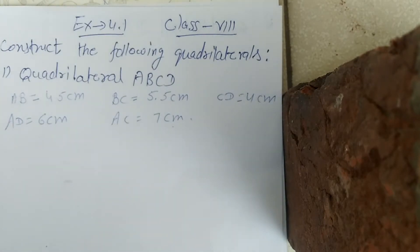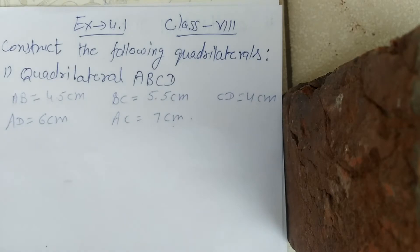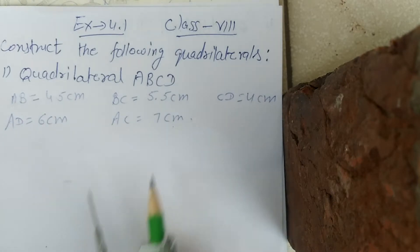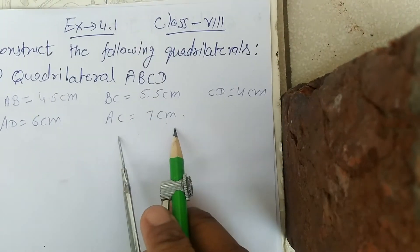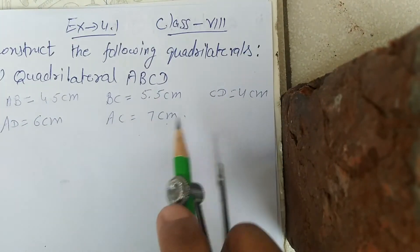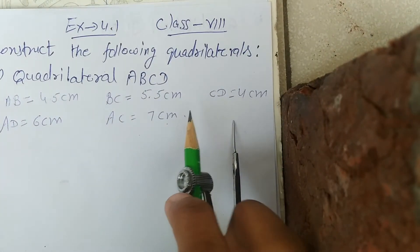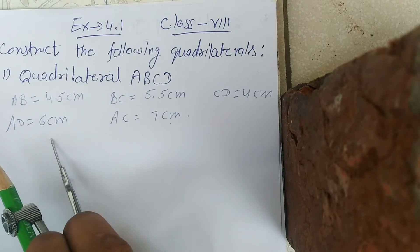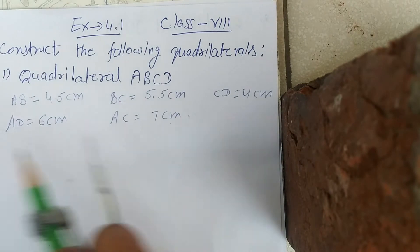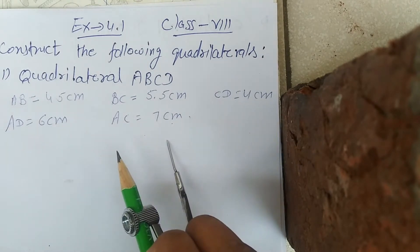Construct the following quadrilateral ABCD, where AB is 4.5 cm, BC is 5.5 cm, CD is 4 cm, AD is 6 cm, and diagonal AC is 7 cm.